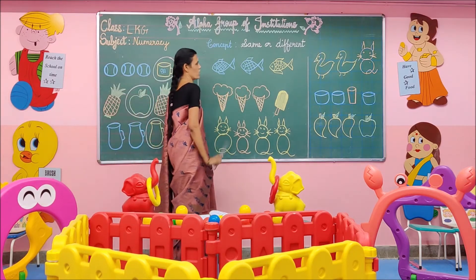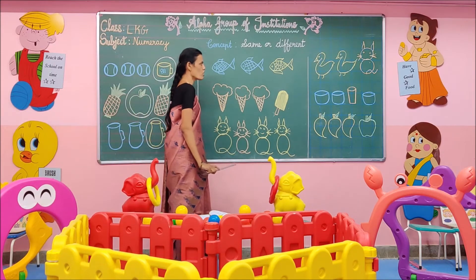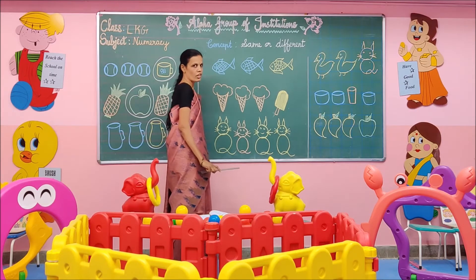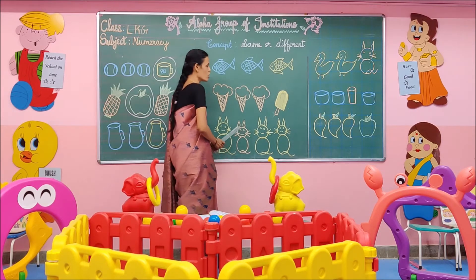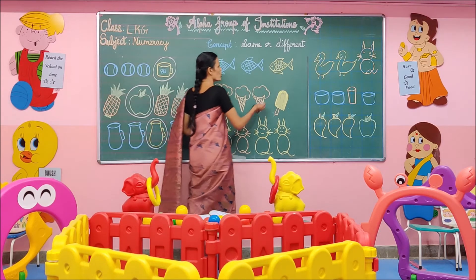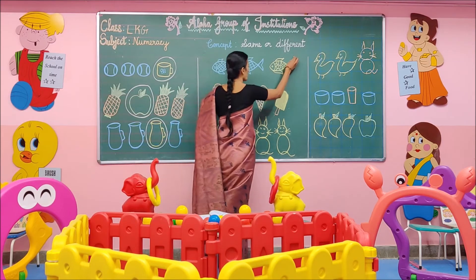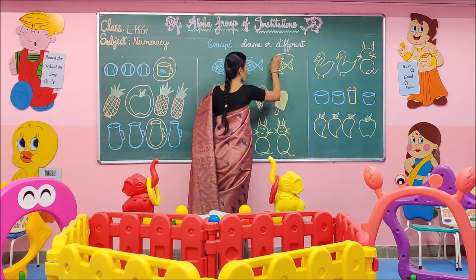Here we have fishes. Which one is different? Yellow fish is different from this group. So I am going to draw a circle around that yellow fish.